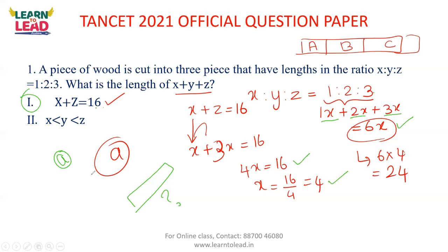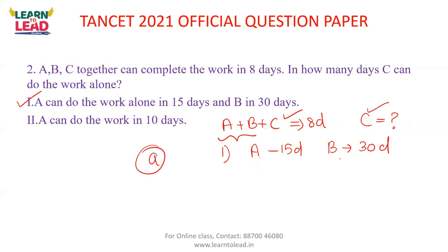The next question is based on time and work. If A, B, and C together can complete the work in 8 days, how many days can C do the work alone? Statement 1: A can do the work alone in 15 days and B in 30 days. It is easier to calculate — Statement 1 alone is sufficient to answer the question.